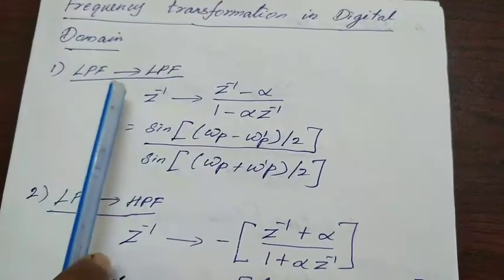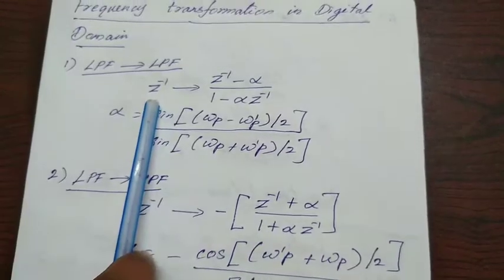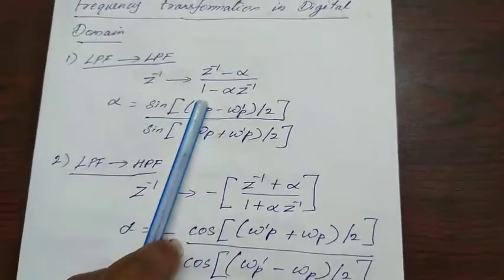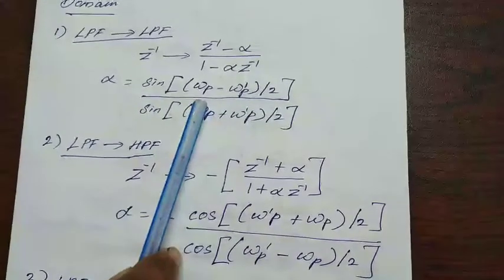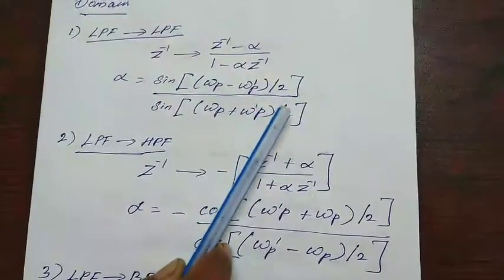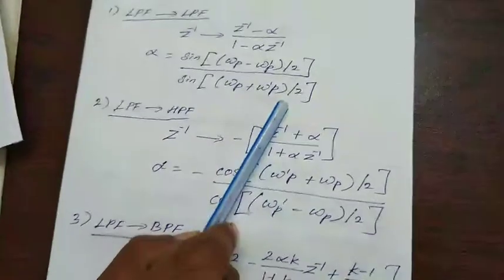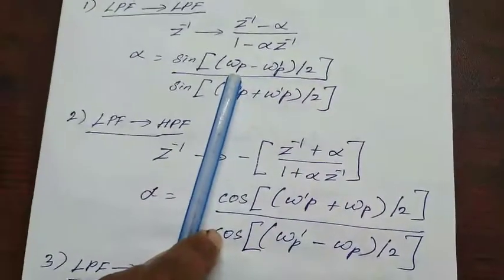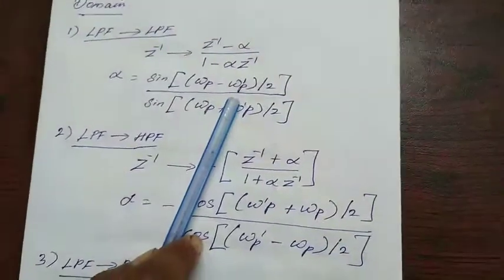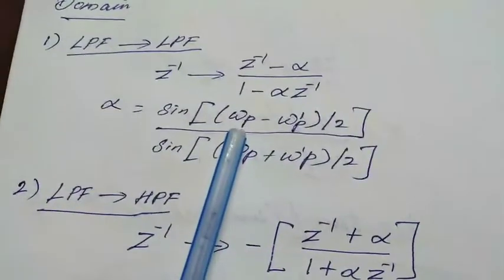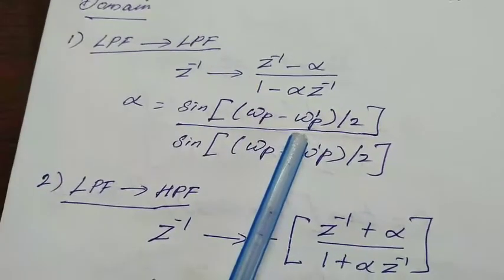The first transformation is low-pass filter to low-pass filter. In the digital transfer function H(z), replace the z-inverse term by: (z-inverse minus alpha) divided by (1 minus alpha·z-inverse), where alpha is given by sine of (omega_p minus omega_p_dash divided by 2), divided by sine of (omega_p plus omega_p_dash divided by 2). Here omega_p is the passband frequency of the original low-pass filter, and omega_p_dash is the passband frequency of the new low-pass filter.